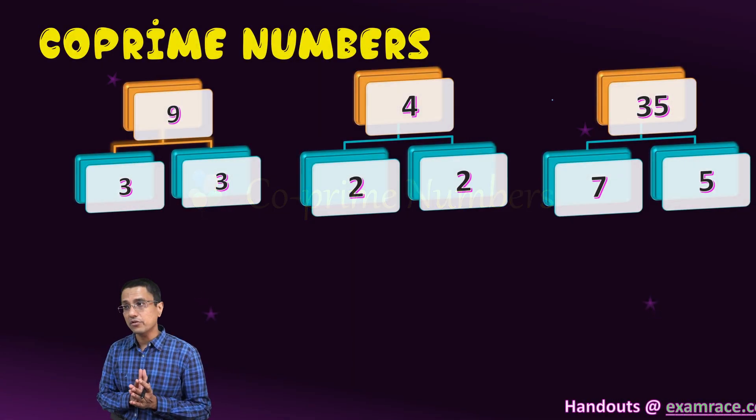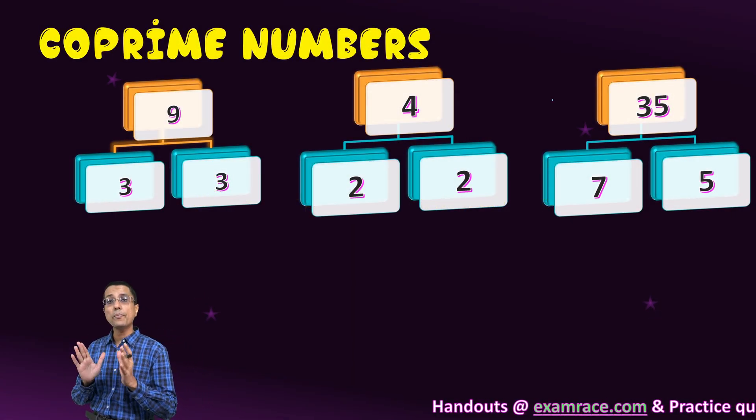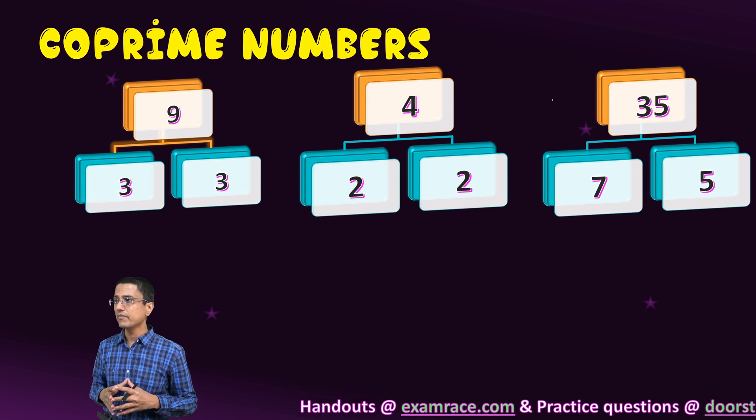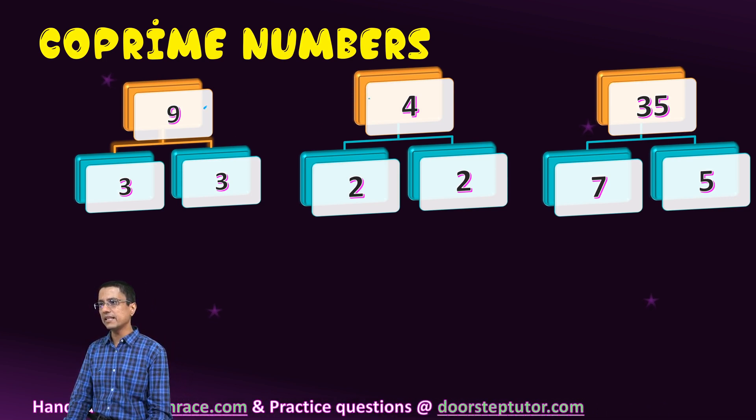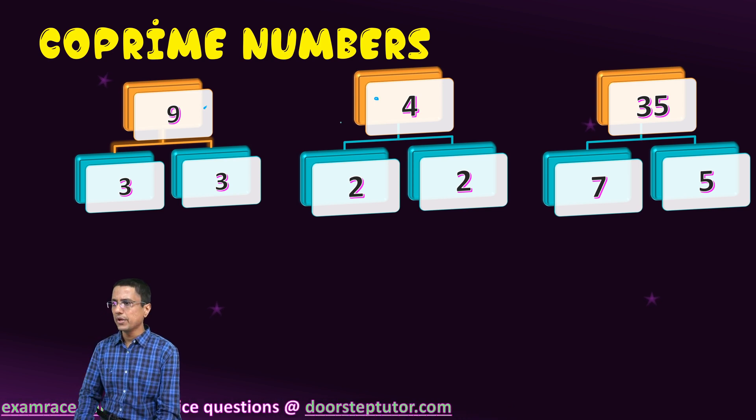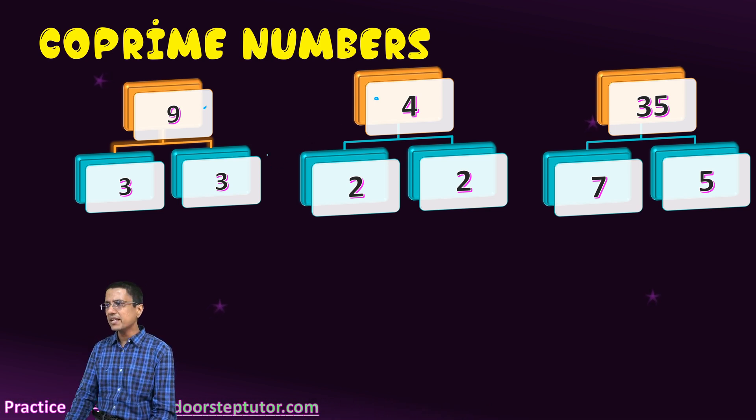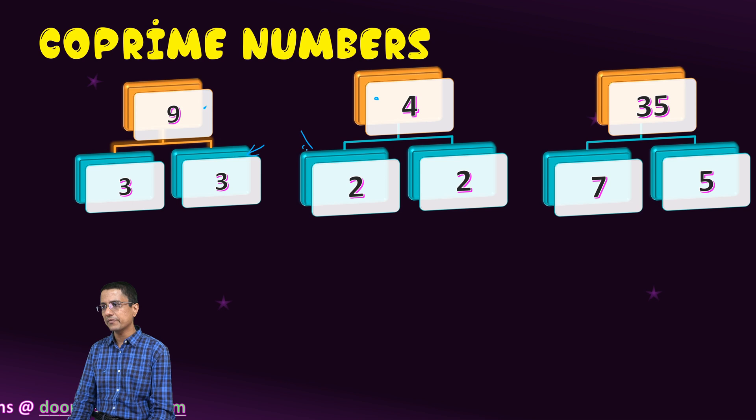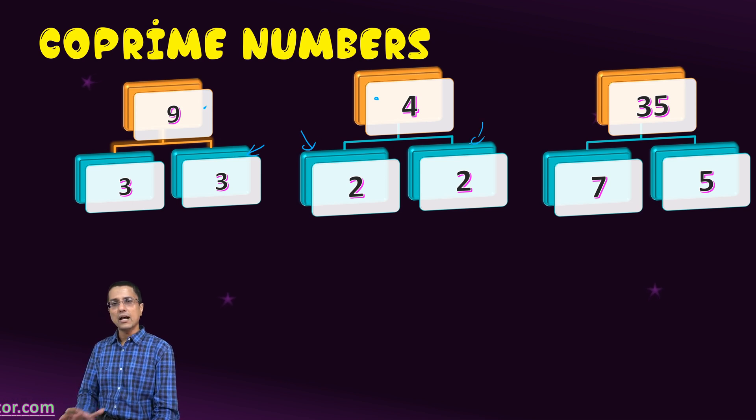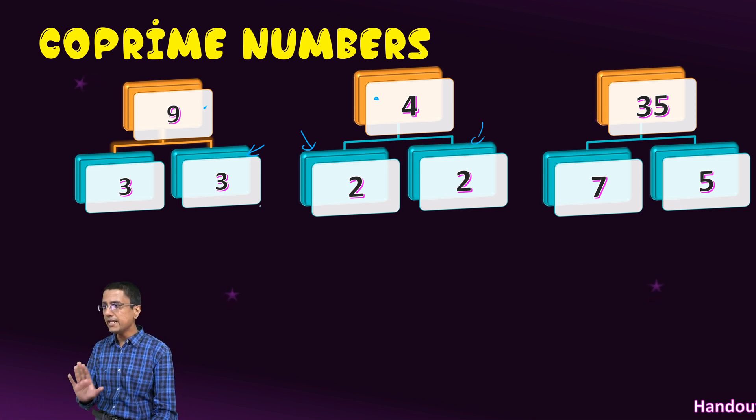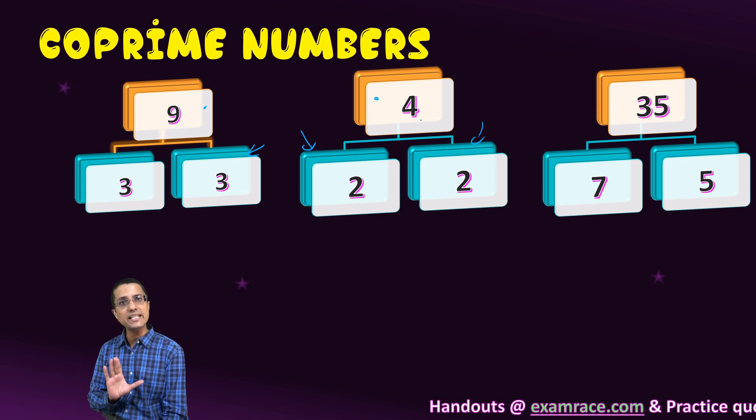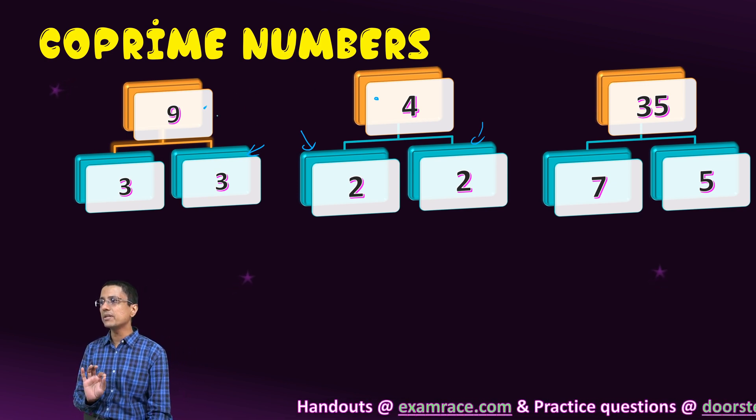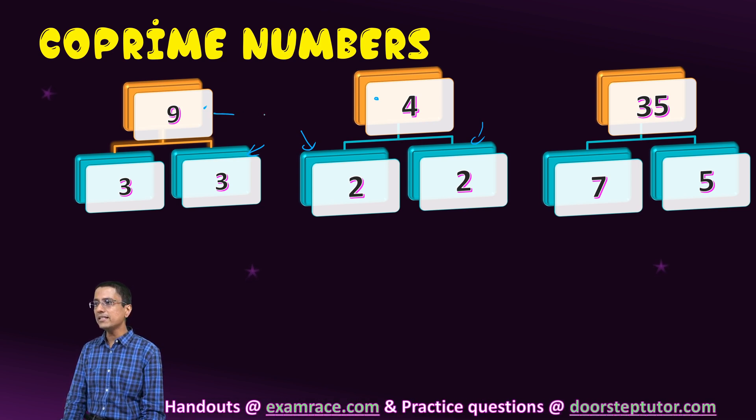Let us now move on to the next important concept, again very important: co-prime numbers. So what does that mean? It means that if two numbers, let's say 9 and 4, if I come up with the prime factorization of those numbers, that is what I have done here, I would not find any common prime factors between these two numbers. If that is the case, then those two numbers 9 and 4 are known as co-prime.